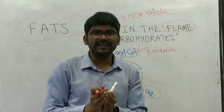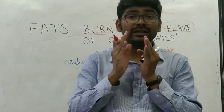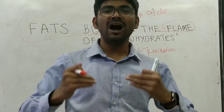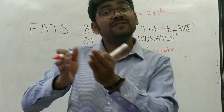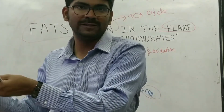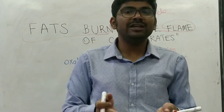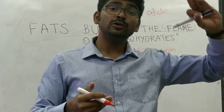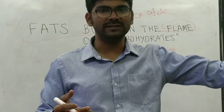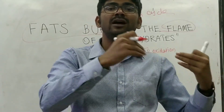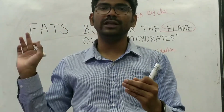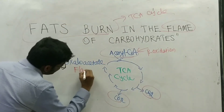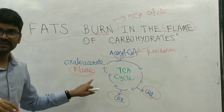Without oxaloacetate, the TCA cycle cannot take place. In the absence of oxaloacetate, acetyl-CoA is converted to ketone bodies. During starvation, all the oxaloacetate will be converted to glucose in gluconeogenesis, so there is no oxaloacetate, and acetyl-CoA will be converted into ketone bodies. So oxaloacetate is the flame of the TCA cycle.